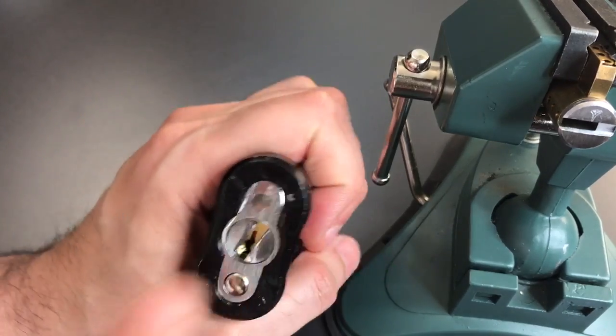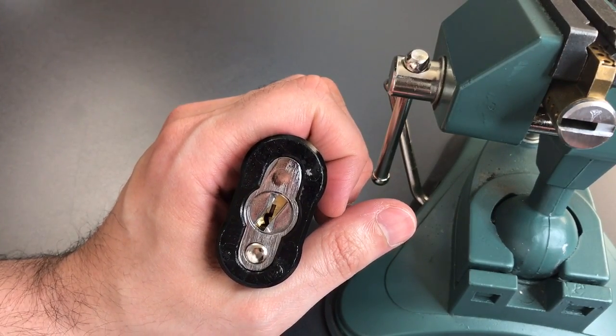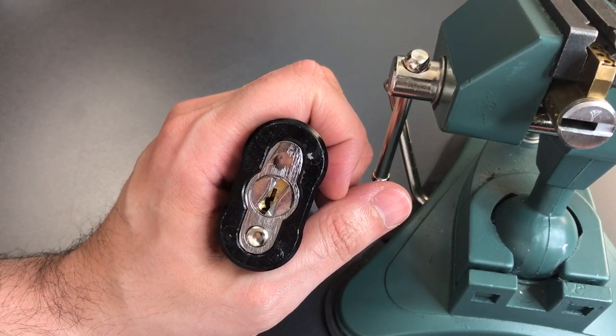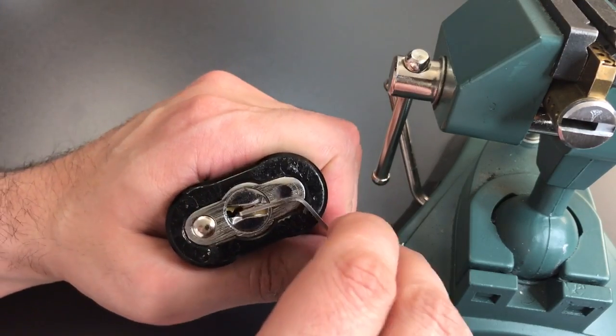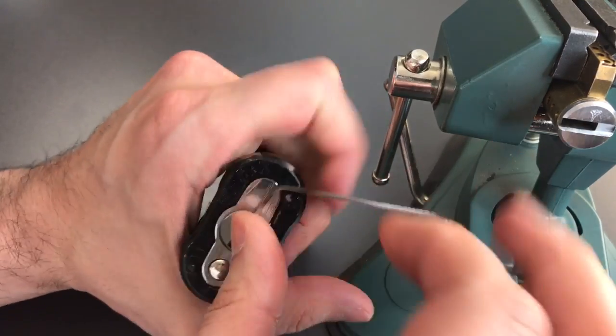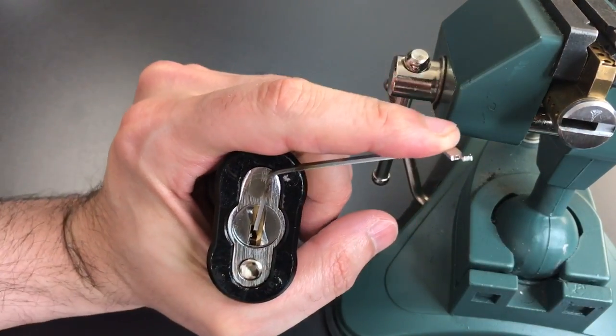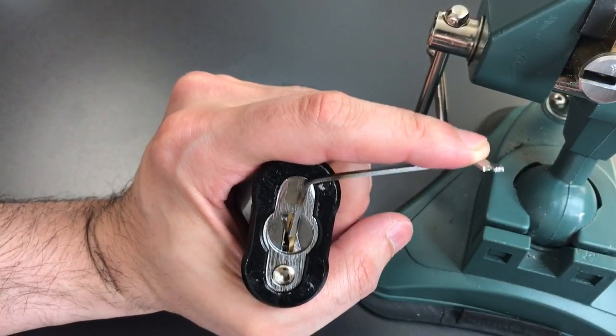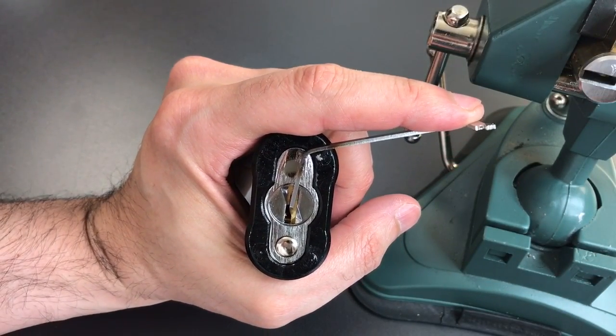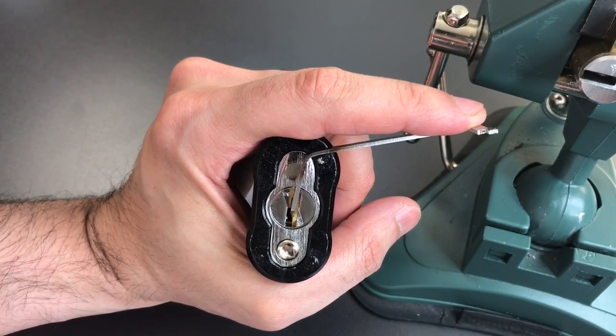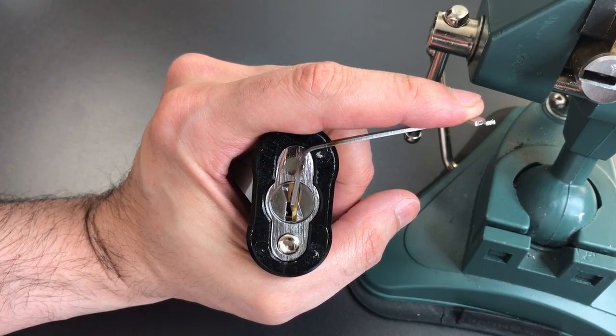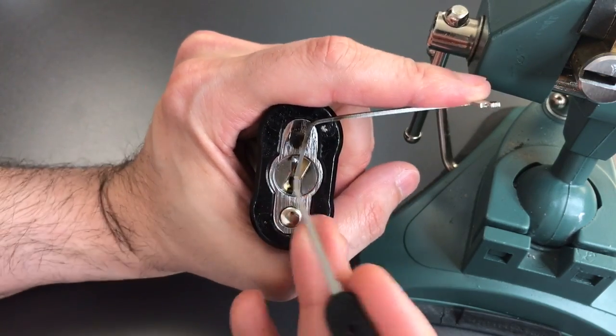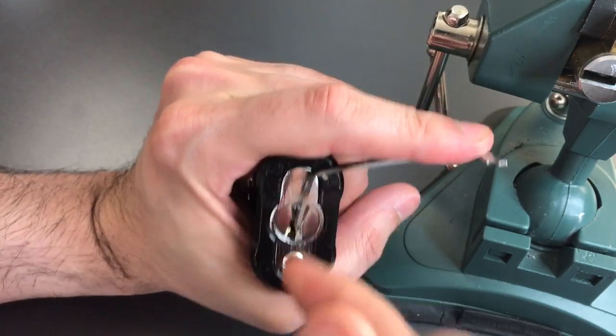So while we've got this out, why don't we pick this guy before we get to the multi-lock. As I do with most of these Schlage keyways, top of the keyway tension with a 50 thousandths pry bar. Let's find my standard hook in 25 thousandths—here we go. Let's get this guy open.